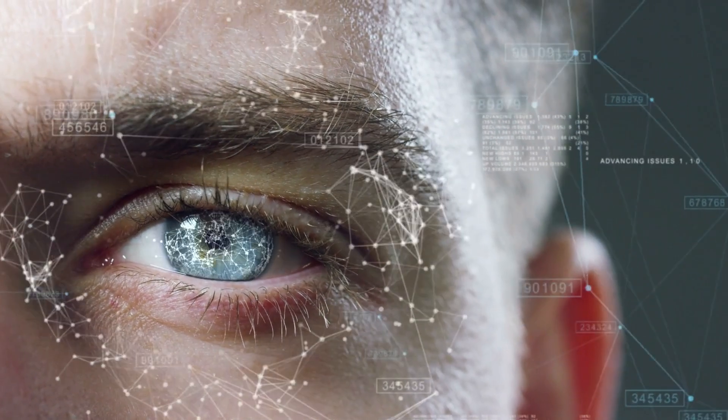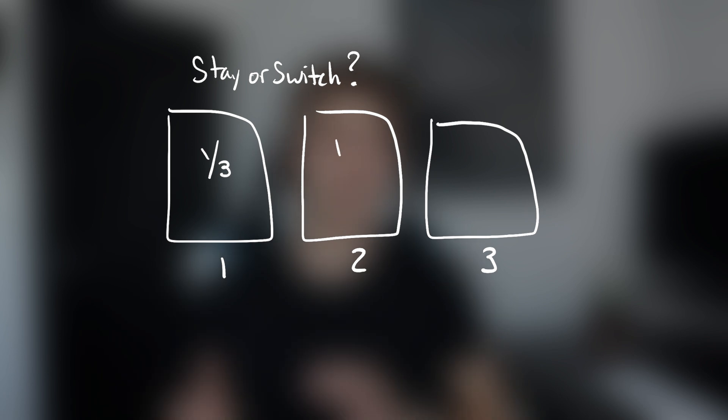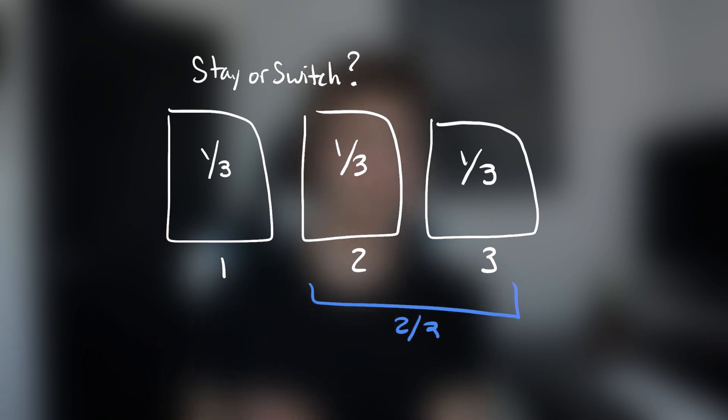Let's take a look at the probabilities to see what you can do to have the best chance of winning the money. In the beginning, any door has a 1 in 3 chance of being the correct one, which gives the other two doors a 2 out of 3 chance.